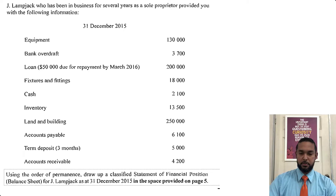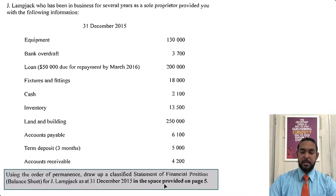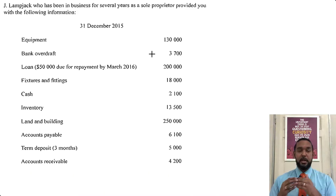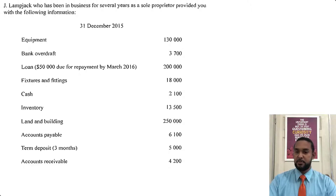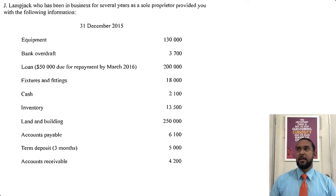What do they want us to do? Using the order of permanence, draw up a classified statement of financial position balance sheet for Jay Lambjack as at 31st December 2015. Order of permanence means you're going to start with the most permanent assets first. Those of you who have been following my series will know that CSEC has been moving away from the working capital approach to balance sheets where you have current assets minus current liabilities, and they are now preferring assets on top and capital and liabilities below.